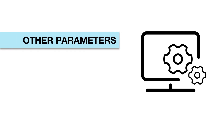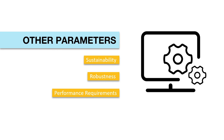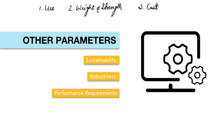There can be many more parameters, for example sustainability, robustness — that is, the ability to stand extreme conditions — or performance requirements, meaning conditions that limit the performance of a material. But that depends on the product. From the point of view of the exam, these three basic parameters we discussed are sufficient to help you design an efficient product within the stipulated time available.